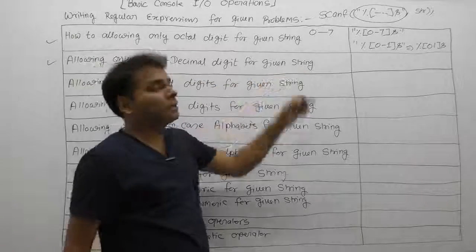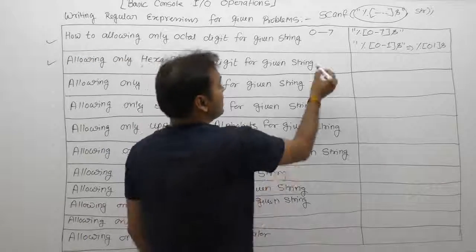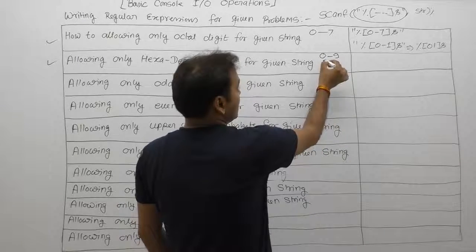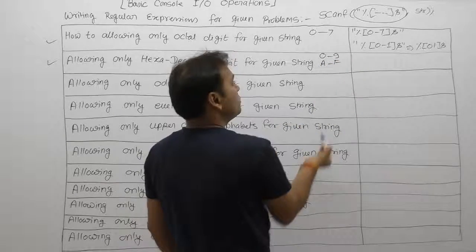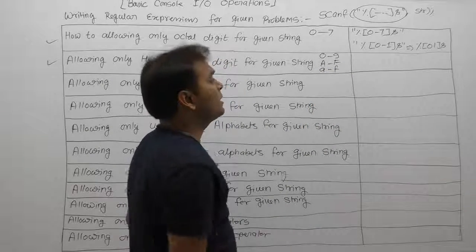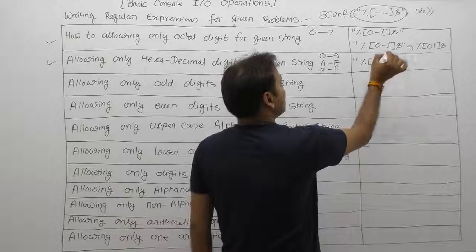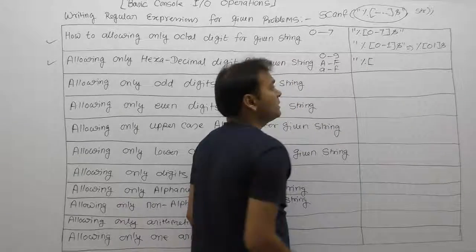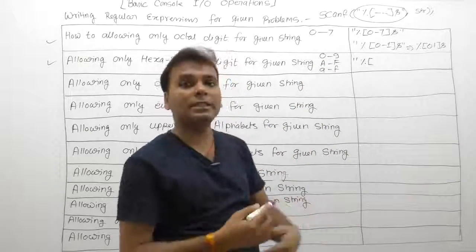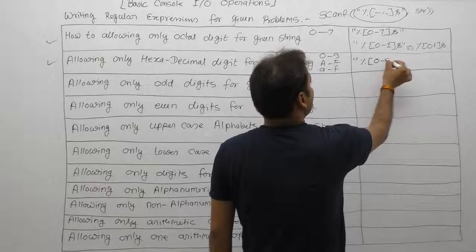Next, allowing only hexadecimal digits for a given string. As we know, hexadecimal allowed symbols are 0 to 9, a to f (lowercase), and A to F (uppercase). The regular expression uses percent, then an opening square bracket — and this sequence must be followed compulsory — listing the ranges.